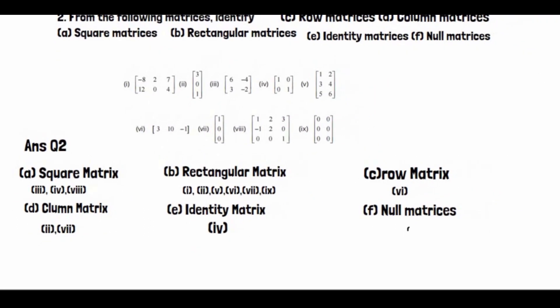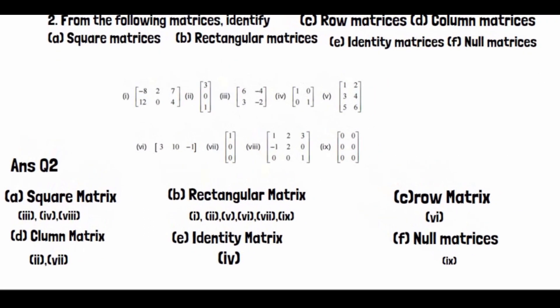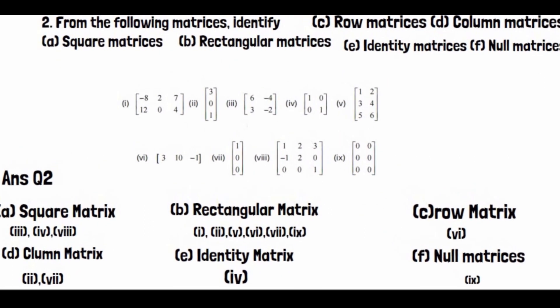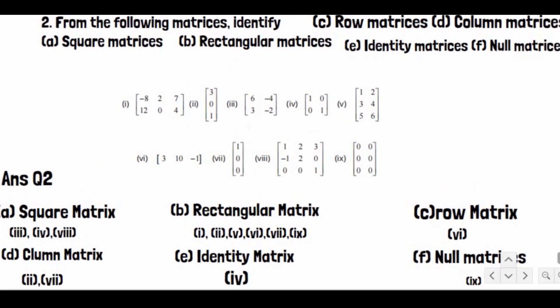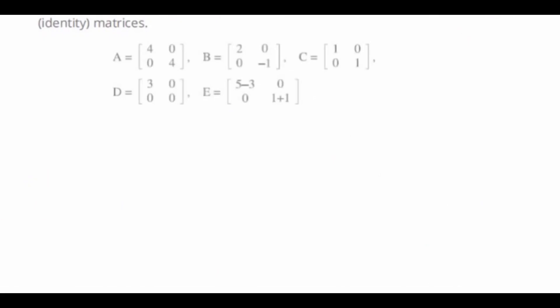Category F is null matrices. Part 9 falls into this category as well. That completes Question No. 2.